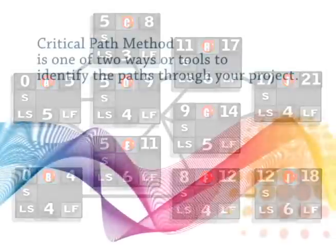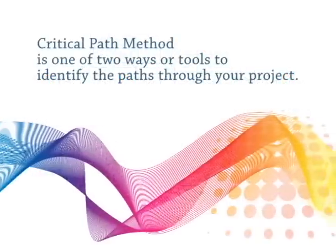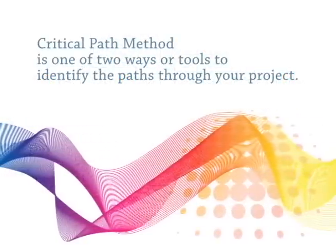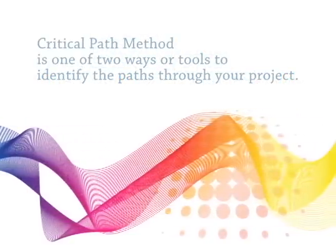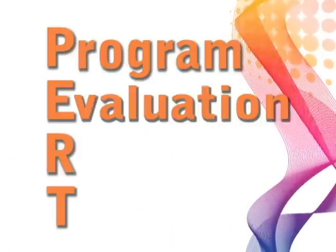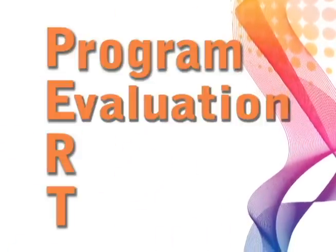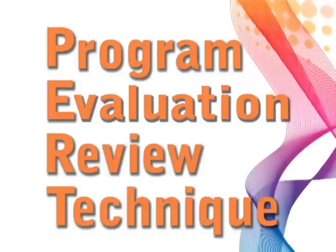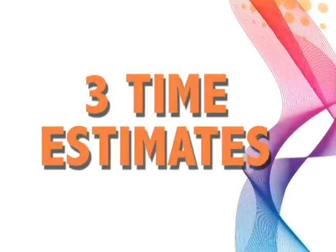So that's the Critical Path Method. As we started out talking, there is a second method — it's called PERT, Program Evaluation and Review Technique. PERT uses three time estimates.